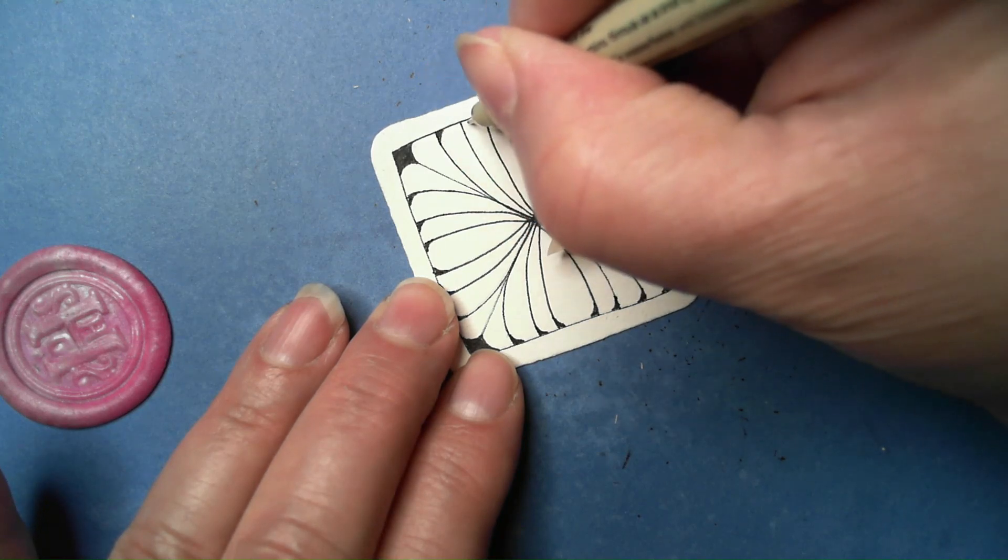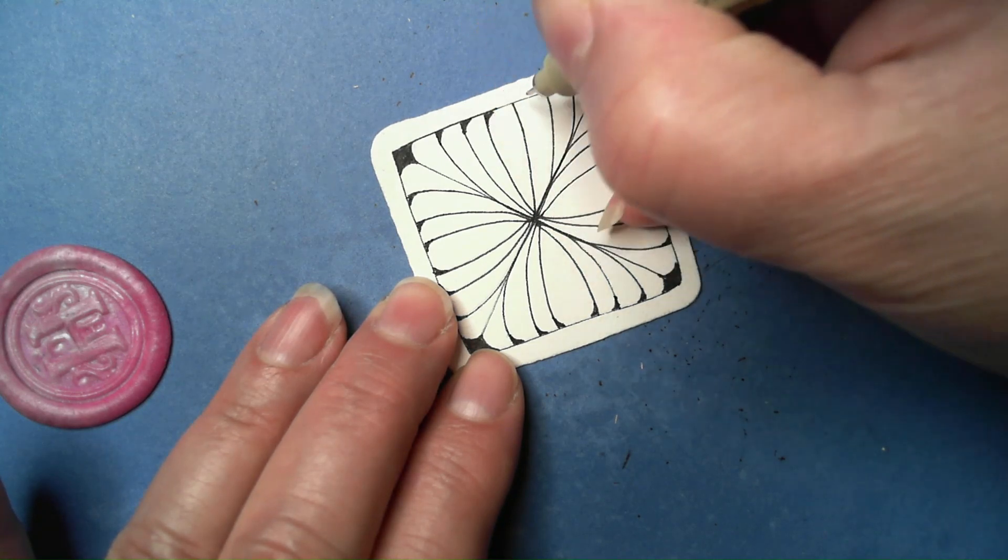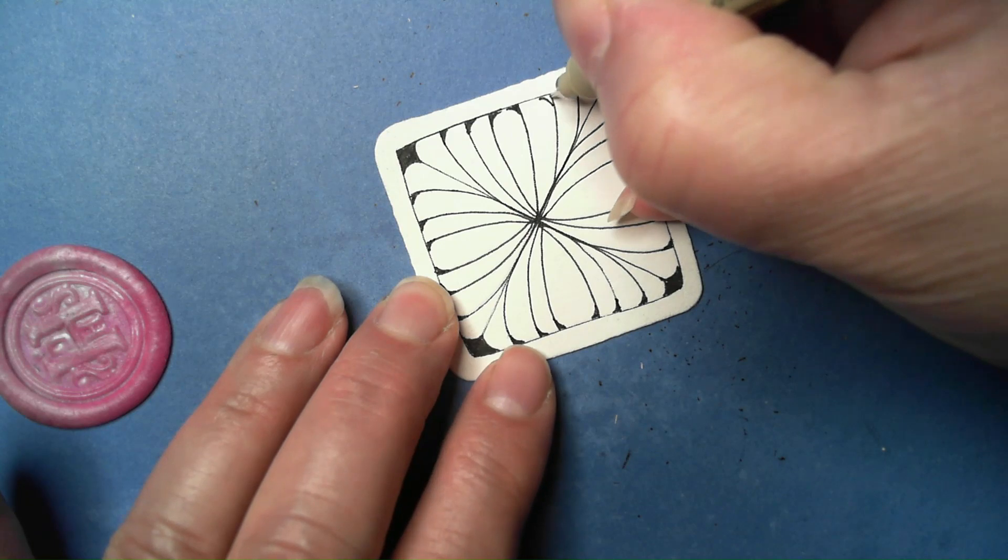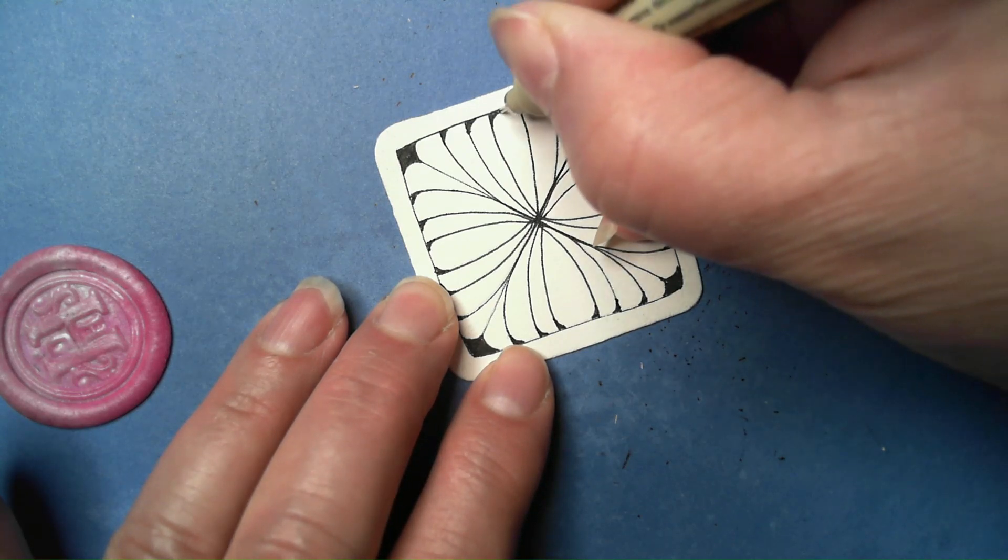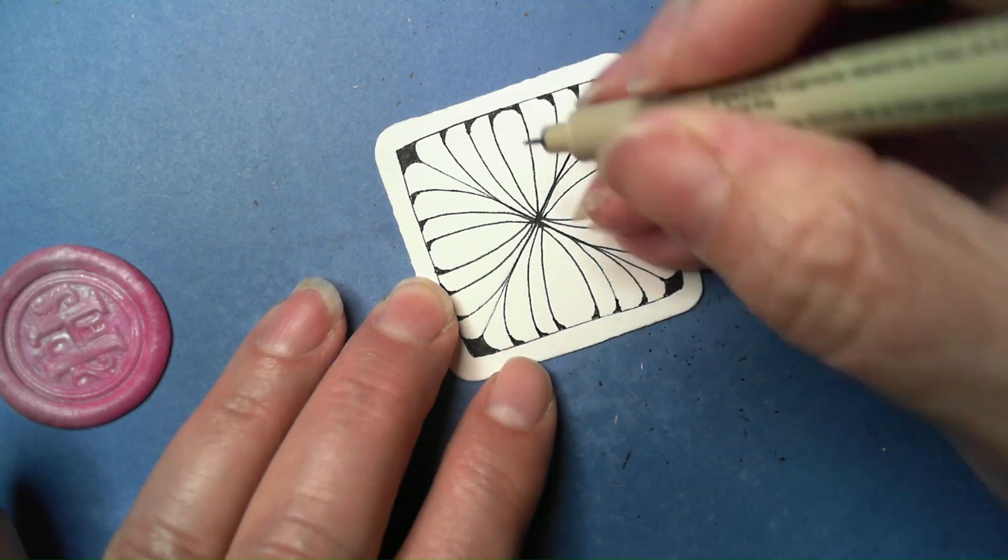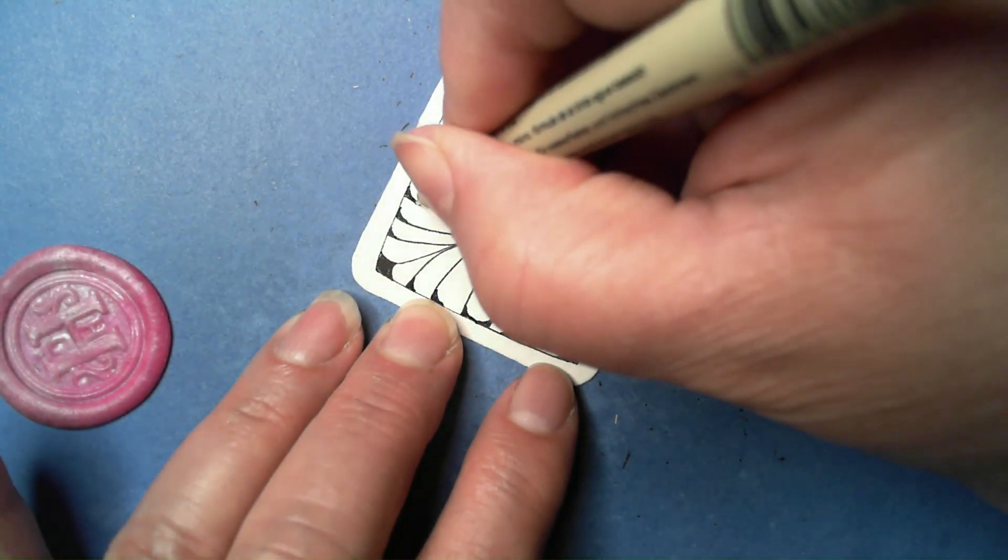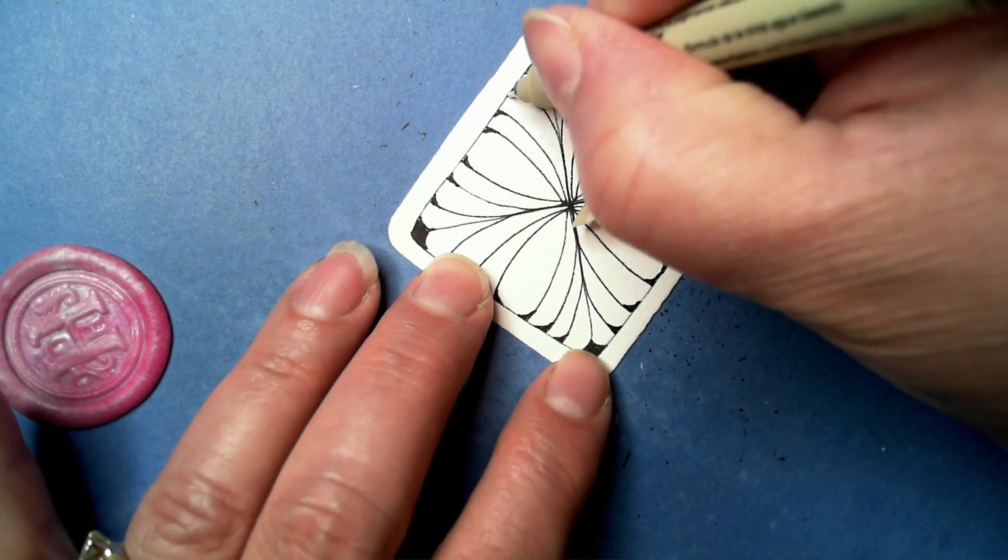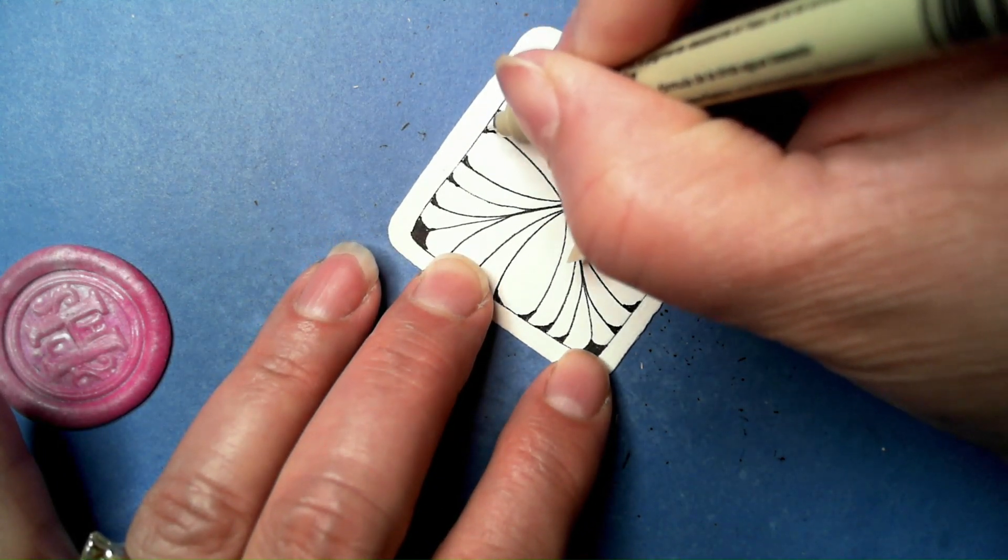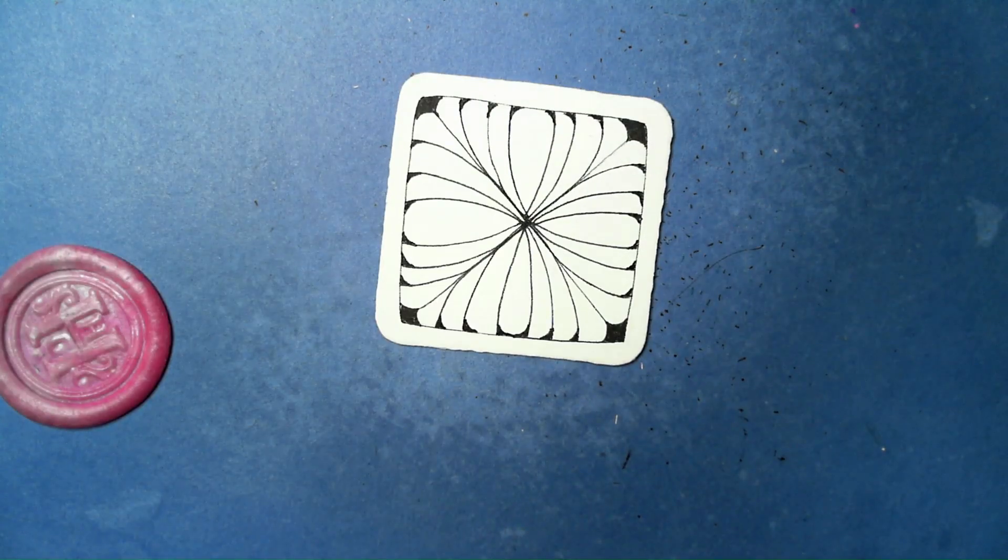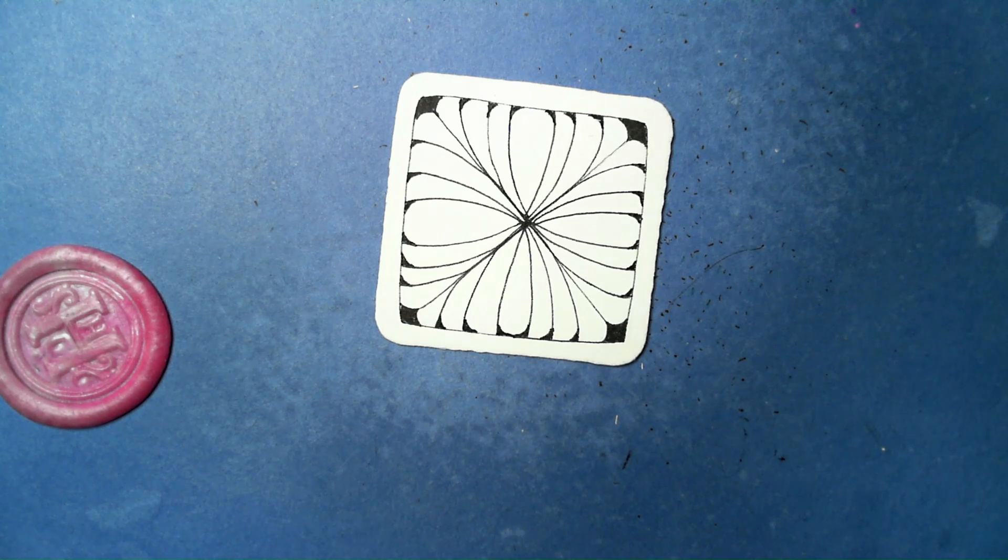I highly recommend taking what I call Zentangle essentials - some people call it Zentangle 101 or a beginner class. Highly recommend taking that from a certified teacher because they should know the whys behind all of this. I call mine essentials because you can take it more than once and always get something new out of it, because we're always at a different place. It's the essential techniques to successful tangling and lingo and stuff like that.